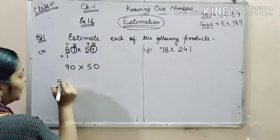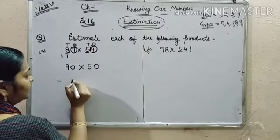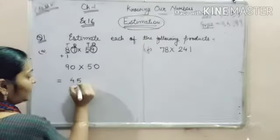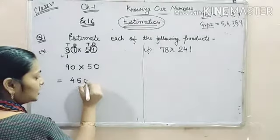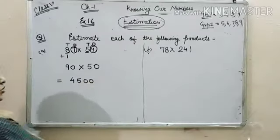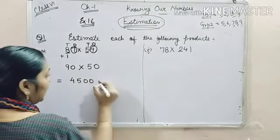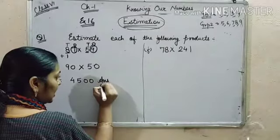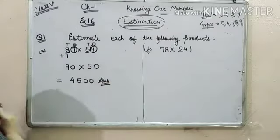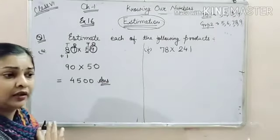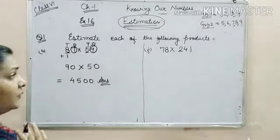Multiplying both the numbers, we get 9 times 5 is 45, and 2 zeros are there. So we will place 2 zeros in the end. This is our answer. So you can see that estimation has made our calculation very easy.